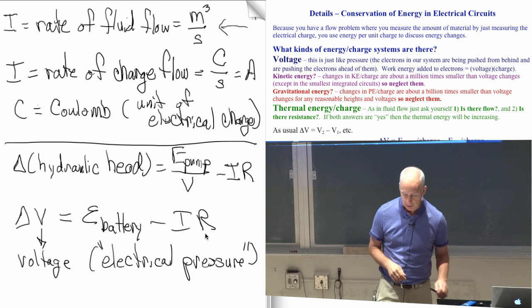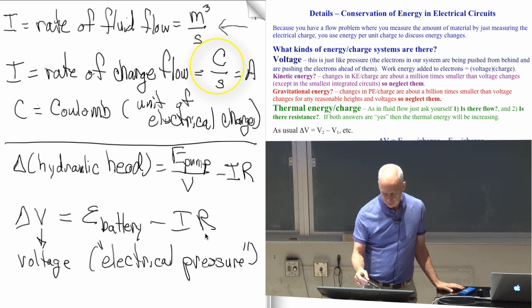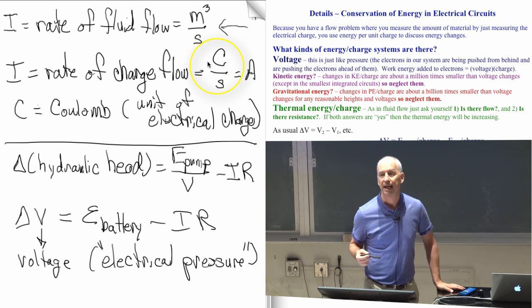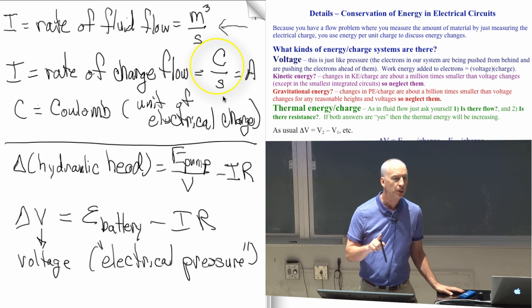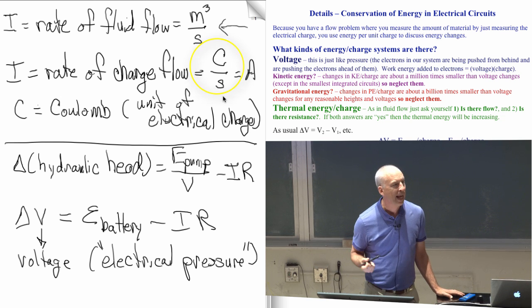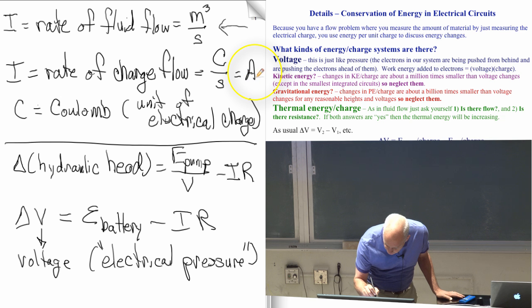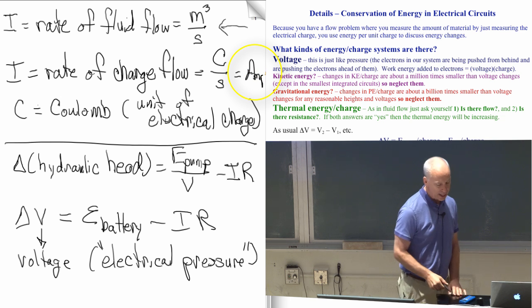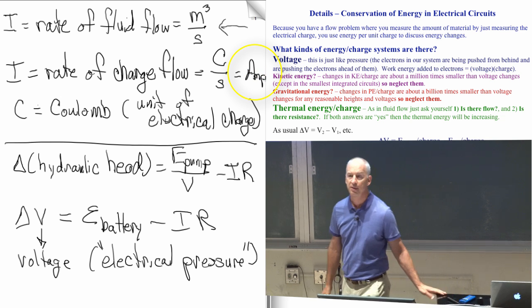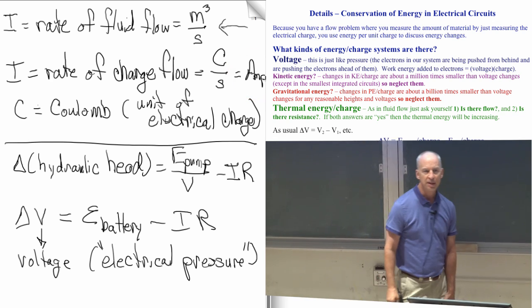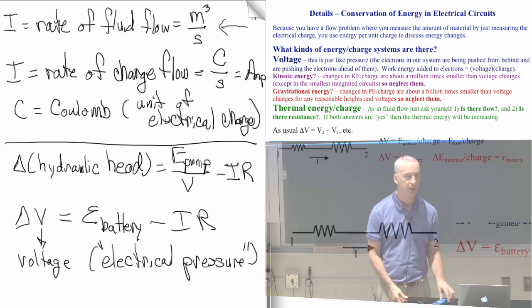The units are different. The unit of charge flow is coulombs per second. One coulomb per second is one amp. I wrote A, but I could just as well write AMP. One amp is one coulomb per second. That's the measurement of the amount of current that flows.